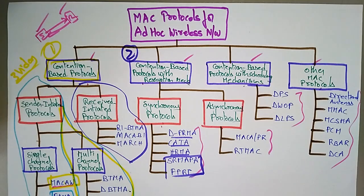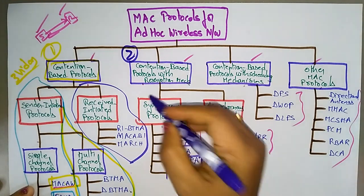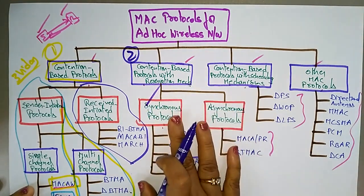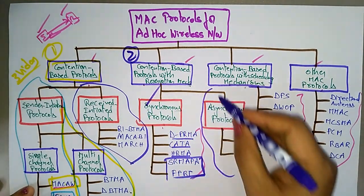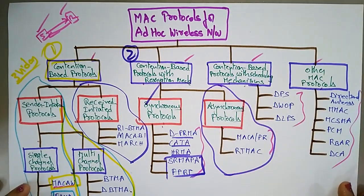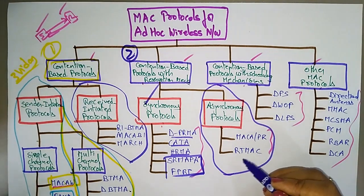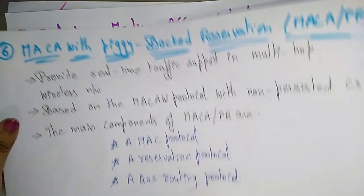Hi students, let's continue with the contention-based protocols with reservation mechanism. So far we have seen about the synchronous protocols. Now let's see about the asynchronous protocols in the contention-based with reservation mechanisms. The asynchronous protocols are MACA-PR and RTMACA.